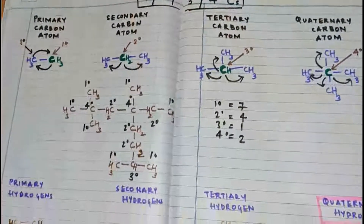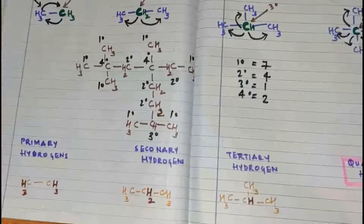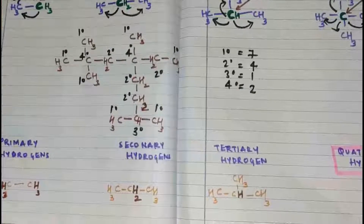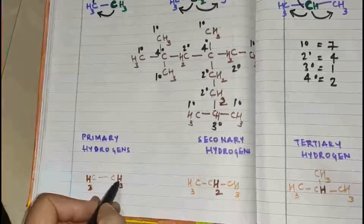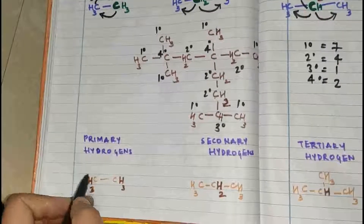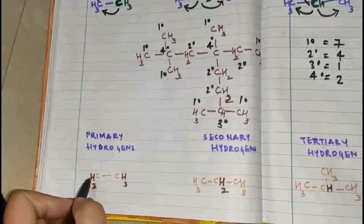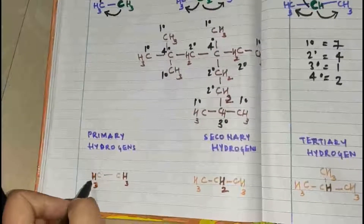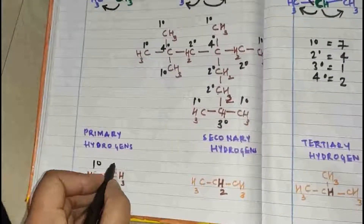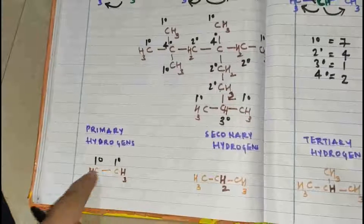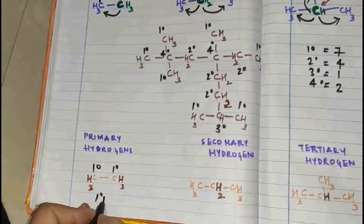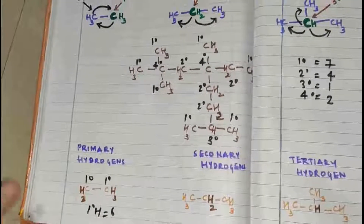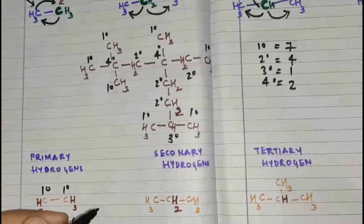Now there is one more concept: primary, secondary, and tertiary hydrogen atoms. Primary hydrogens are the hydrogens which are present on a primary carbon atom. On this primary carbon and this primary carbon, we have hydrogen atoms attached. Hydrogens attached to primary carbon are called primary hydrogen atoms. How many hydrogens do we have? We have three here and three here — so primary hydrogens equals six hydrogen atoms.